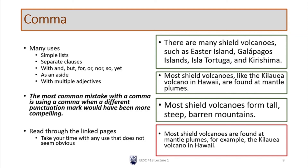We also use commas with multiple adjectives. For example: 'Most shield volcanoes form tall, steep, barren mountains.' The words tall, steep, and barren all refer to the noun mountain — this is different from a hyphen, where two words form one compound modifier. The most common mistake with a comma is using one when a different punctuation mark would be more appropriate. When a sentence has many commas serving different purposes — lists, clause separation, dates — it becomes hard to understand what each comma is doing, and you should consider substituting a different punctuation type.